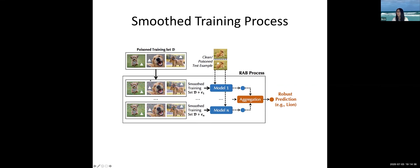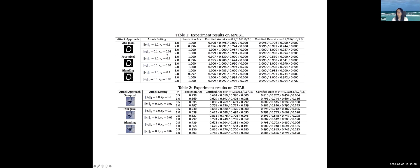On a high level, in the federated learning scenario, for each agent — assuming they are honest, or we can enforce this process — for all the training data they have, they can add certain noise drawn from a Gaussian distribution, say Y₁ for the first agent and Yₙ for the nth agent. The whole dataset is thus smoothed out. Each agent then trains a model on this smoothed dataset and sends it to the aggregator to perform aggregation. By doing this process, we can obtain certified robustness for the trained models against backdoor attacks.